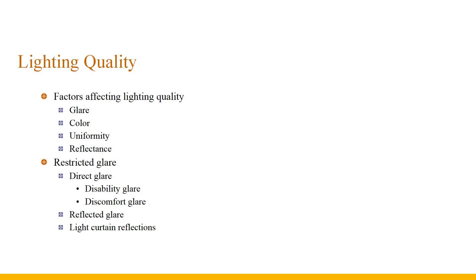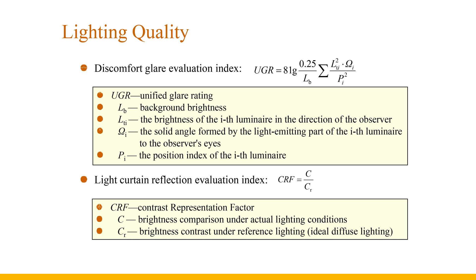Direct glare includes disability glare and discomfort glare. Limiting discomfort glare can limit disability glare. Discomfort glare is evaluated using the unified glare rating (UGR). The unified glare value is a psychological parameter that measures the subjective response of the human eye to uncomfortable feelings caused by light emitted by lighting devices in the visual environment. This indicator is applicable in the following situations: first, suitable for simple tube-shaped rooms, not suitable for rooms with indirect lighting and luminous ceilings; second, suitable when the light-emitting part of the lamp forms a solid angle range of 0.0003 steradians to the eyes.